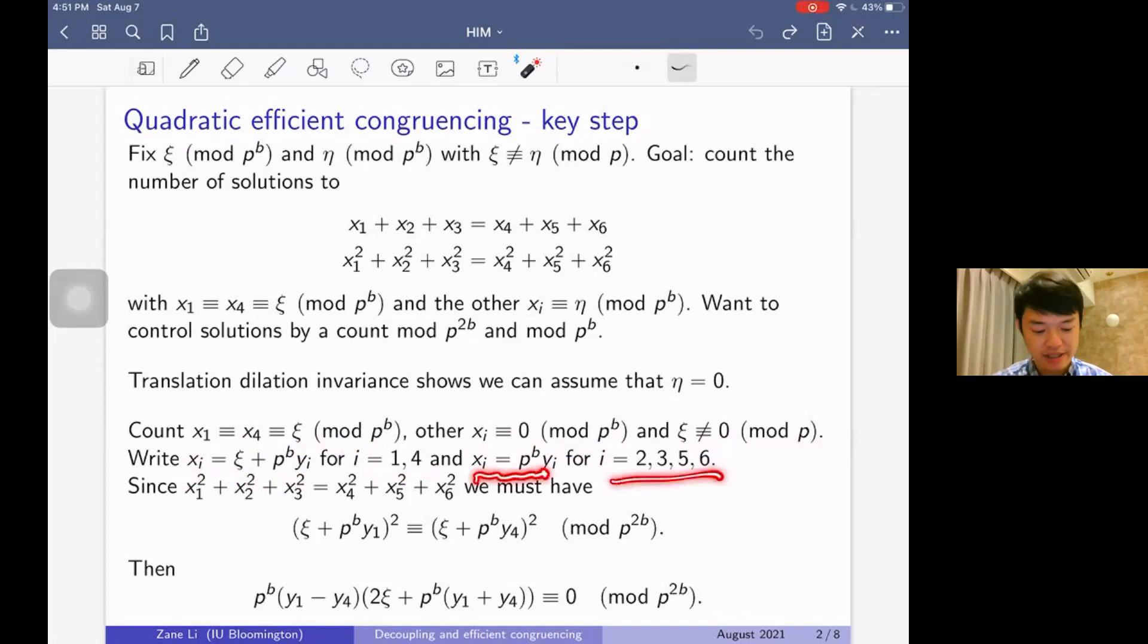And the other x_i's we're just going to write as p^b·y_i for i = 2, 3, 5, 6. So what do we do now? Well, we look at the quadratic equation. It seems natural because the x_2, x_3, x_5, x_6 variables are equal to p^b·y_i, so these variables squared are zero mod p^{2b}. So it's natural to look at this equation mod p^{2b}.